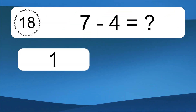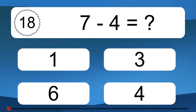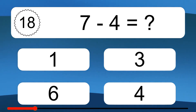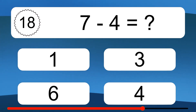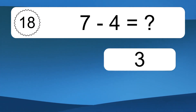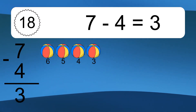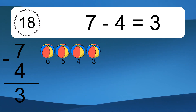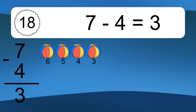7 minus 4 equals what? 7 minus 4 equals 3. Let's count it. 6, 5, 4, 3.